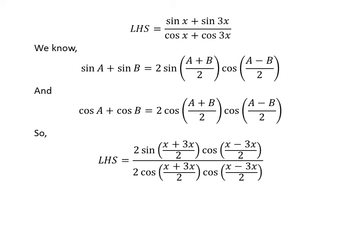Applying the above identities, the left-hand side becomes: 2 times sine of (x plus 3x) upon 2 times cosine of (x minus 3x) upon 2, all divided by 2 times cosine of (x plus 3x) upon 2 times cosine of (x minus 3x) upon 2.